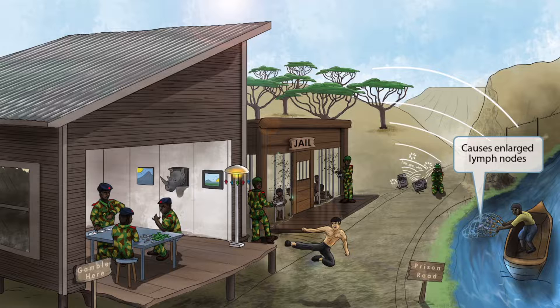Now look at this innocent fisherman. He's just trying to make a living and happens to see these imprisoned children. He's got himself a fishing net. That net represents the lymphatics and the enlarged lymph nodes that the infection can cause. Again, this is caused by all three of the species: brucei, gambians, and rhodesians.